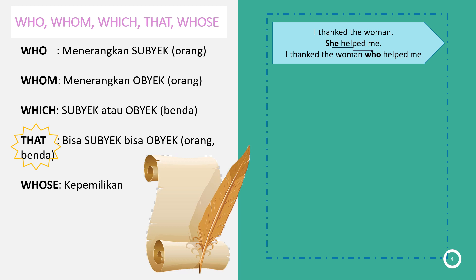Let's have a look at the examples. Contoh pertama: 'I thanked the woman. She helped me.' Tensisnya adalah simple past — pakai verb dua. Kalau kita mau satuin pakai adjective clause: 'I thanked the woman' — wanita yang mana? Wanita yang membantu saya. Karena wanita itu adalah orang, maka kita pakai 'who.' Jadinya: 'I thanked the woman who helped me.'